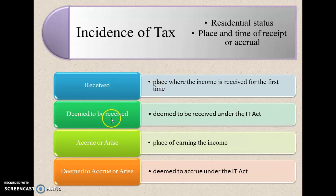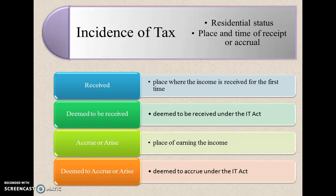Deemed to be received — the amount is not actually received by the assessee, but as per the Income Tax Act, it is deemed or assumed to be received by that assessee. The next is Accrue or Arise, which is the place of earning the income. In the previous example, the employee is working in an Indian IT company, given an on-site opportunity, and has gone to USA where he receives his salary. The place of receipt is USA, but the place where the income is earned — the source of income — is inside India. So he earned the income in India and received it in a foreign country. Accrue or Arise is the place where the income is earned.